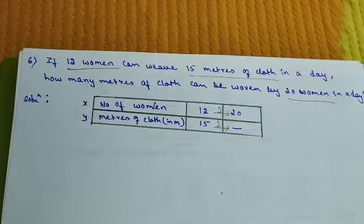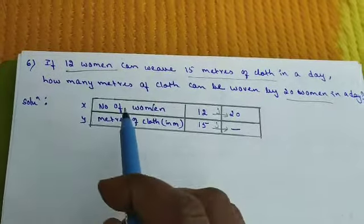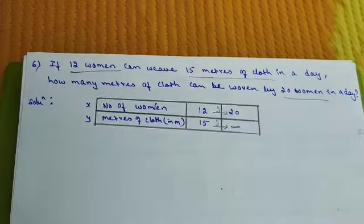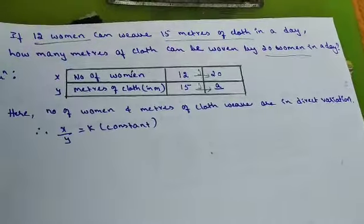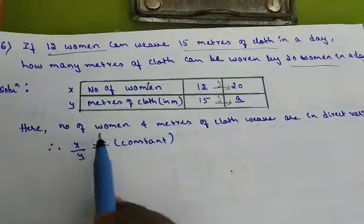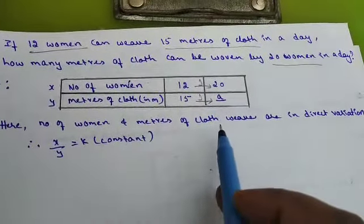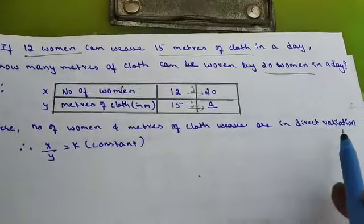Therefore I can take two quantities. That is, number of women and meters of cloth are in direct variation.